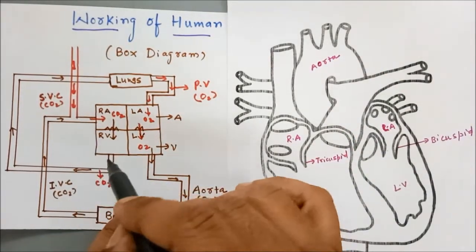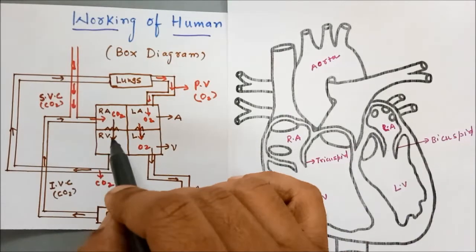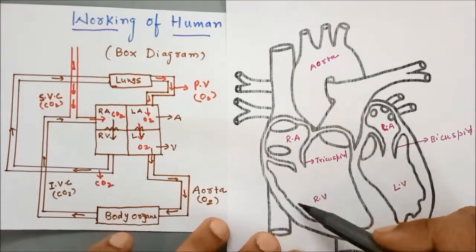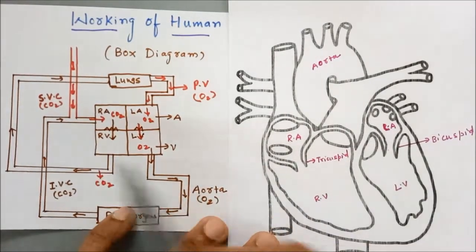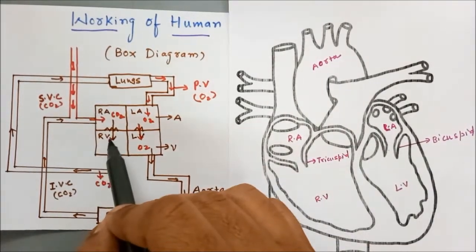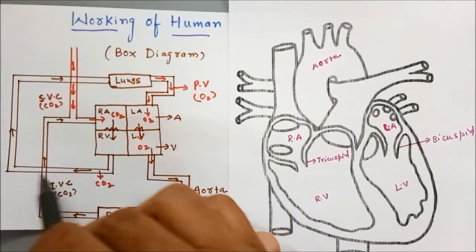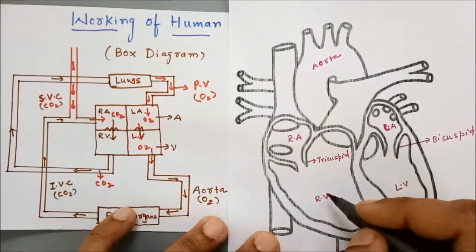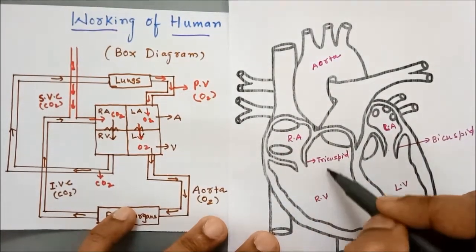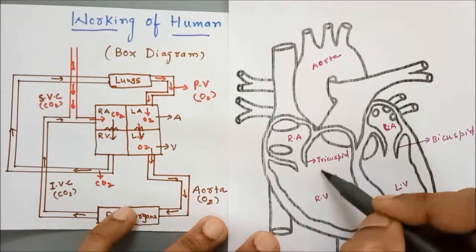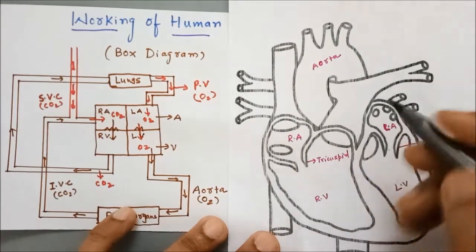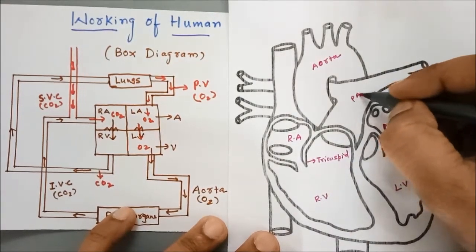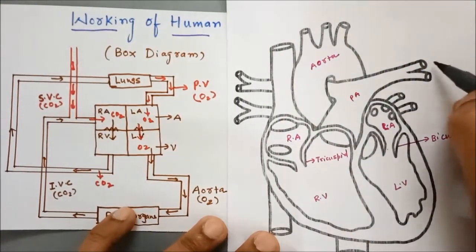Let us look at this part — the right ventricle. Here is the right ventricle; from the right ventricle the pulmonary artery starts. So from the right ventricle the blood goes into the pulmonary artery — this is the pulmonary artery — to the lungs.